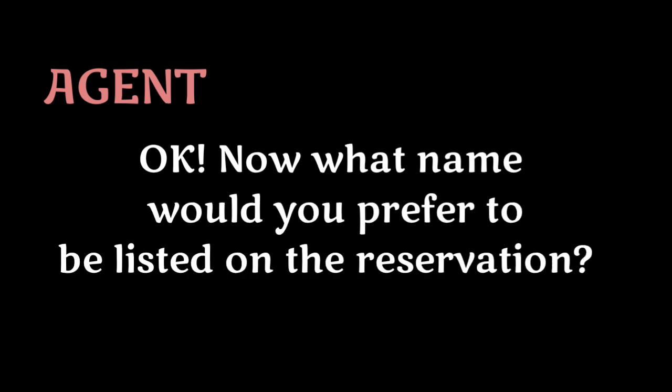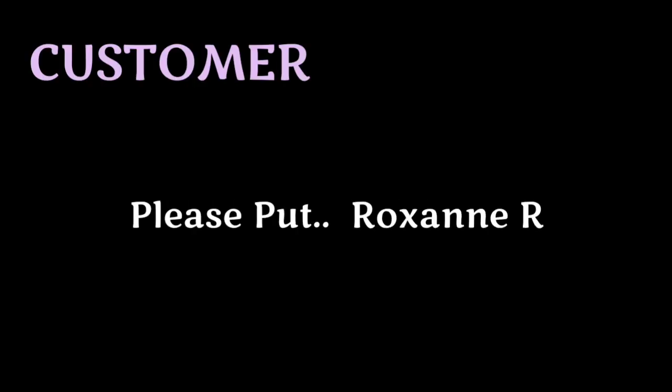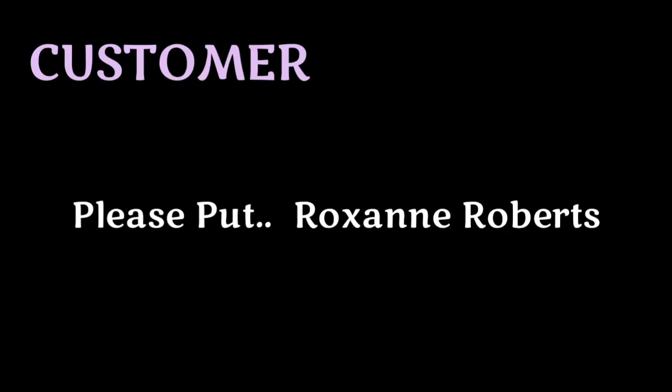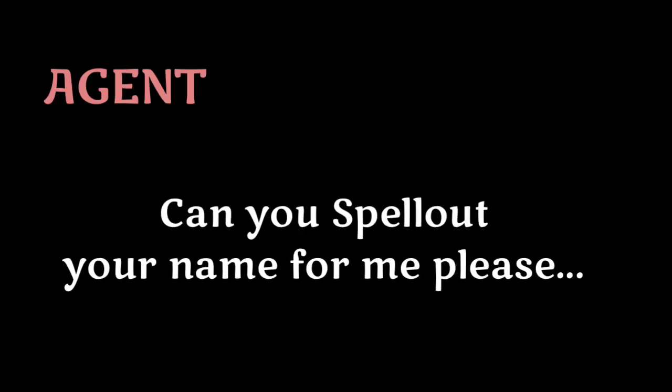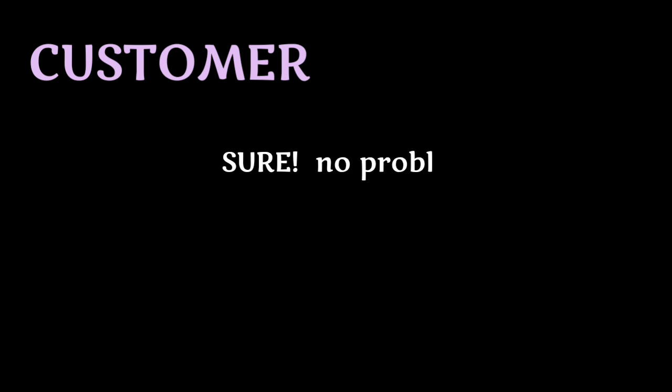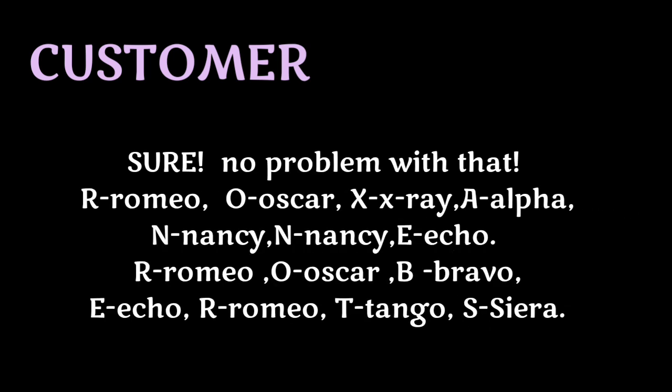Okay, that's fine for me. And what name would you prefer to be listed on the reservation? Please put Roxanne Roberts. Can you spell out your name please? Sure, no problem. R as in Romeo, O as in Oscar, X as in X-ray, A as in Alpha, N as in Nancy, N as in Nancy, E as in Echo — Roberts: R as in Romeo, O as in Oscar, B as in Bravo, E as in Echo, R as in Romeo, T as in Tango, S as in Sierra.